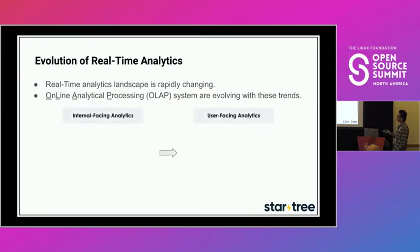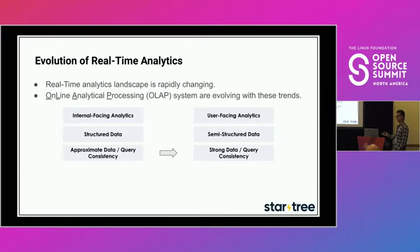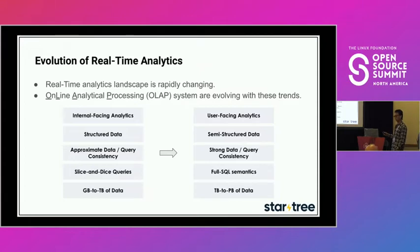The first trend: internal-facing analytics are increasingly moving toward a new user persona — the end user. Second: more users are ingesting semi-structured or even unstructured data directly, rather than preprocessing and structuring it first. Third: users are demanding stronger data and query consistency — approximate correctness was good enough in many old use cases but no longer. Fourth: SQL semantics are going well beyond simple slicing, dicing, filtering, and aggregations — now we're talking about complex event analysis. Fifth: the amount of data in OLAP systems is growing from tens of gigabytes into the terabyte and now petabyte world.